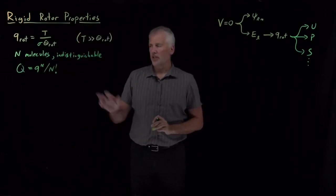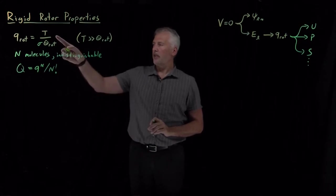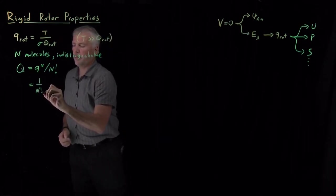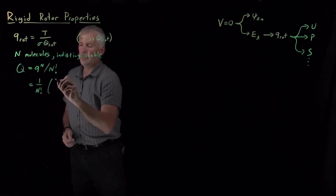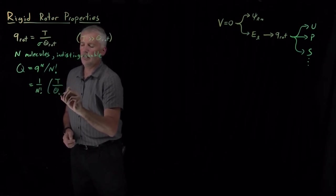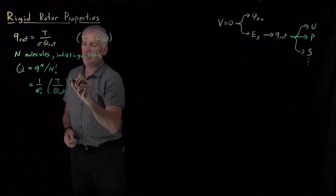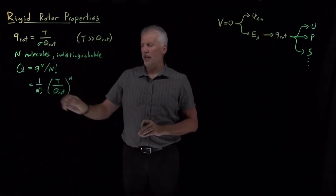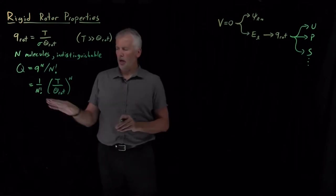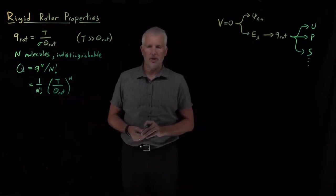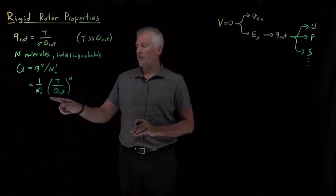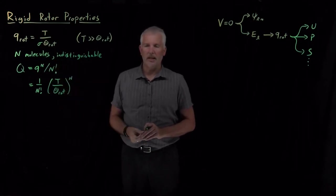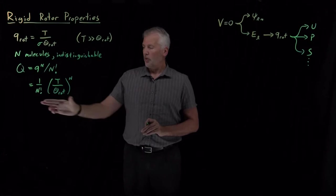Since they're indistinguishable, I've got 1 over N factorial, T over theta raised to the Nth power. And I can either include the symmetry factor or not. I won't include the symmetry factor. It won't end up changing our result. But if the symmetry factor is included, it would show up in here as 1 over sigma to the N as well. So, what do we do with that?